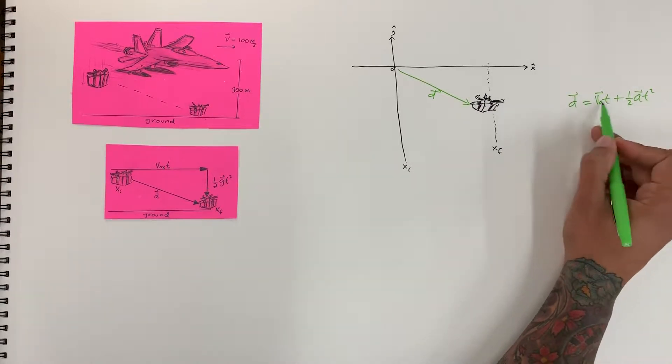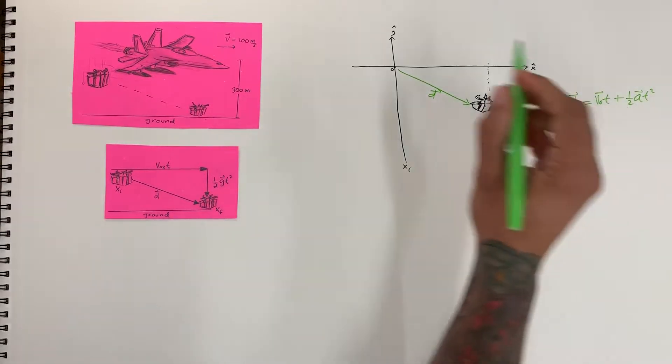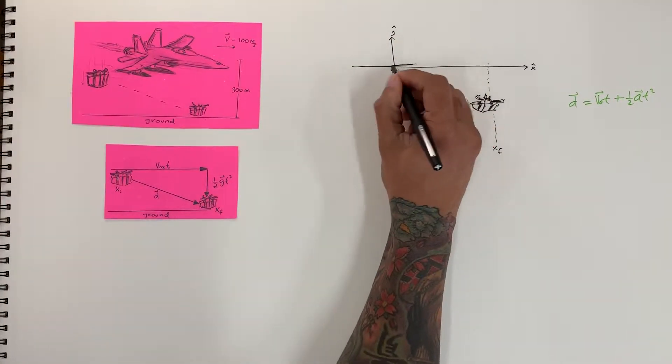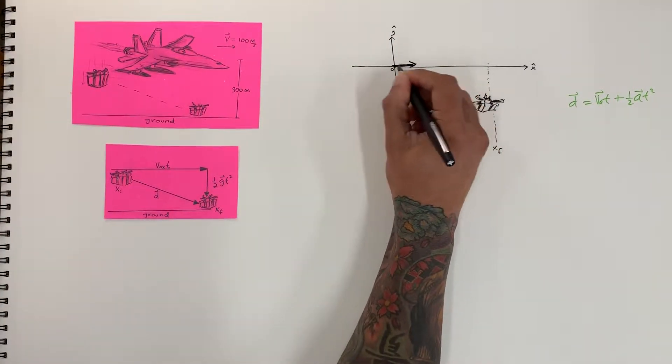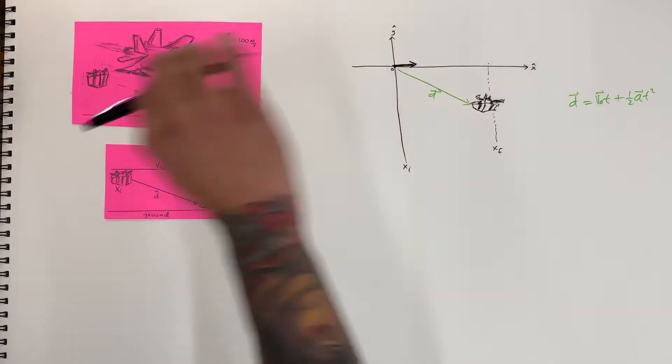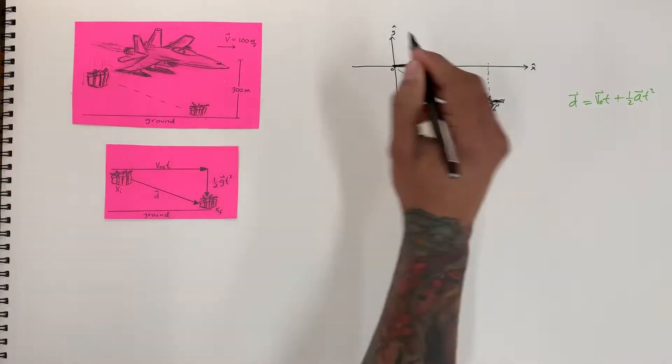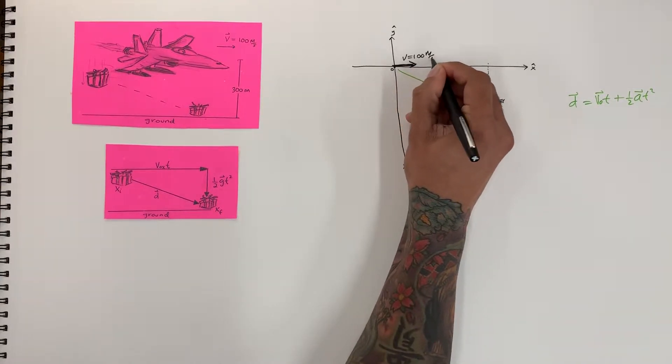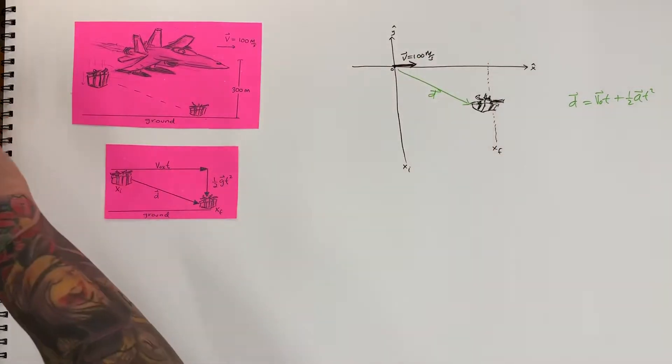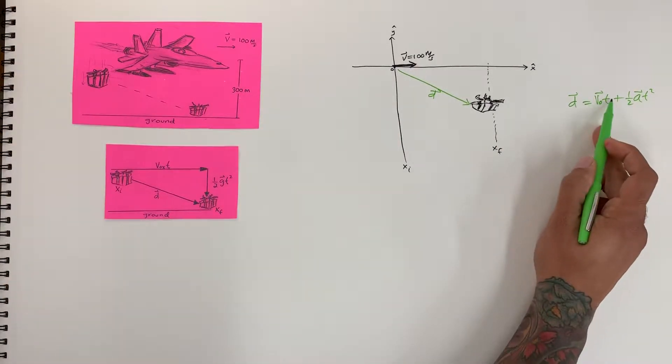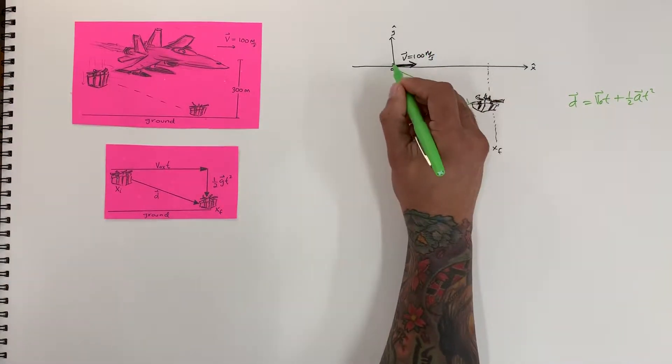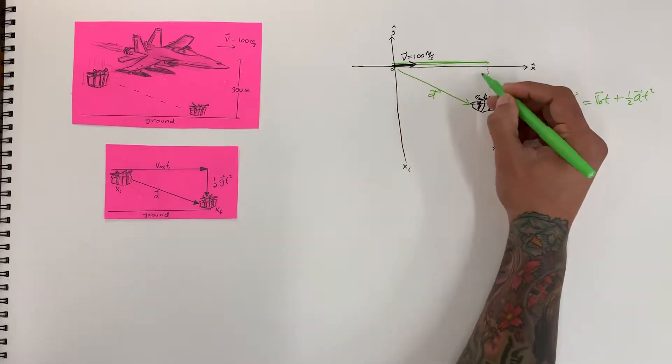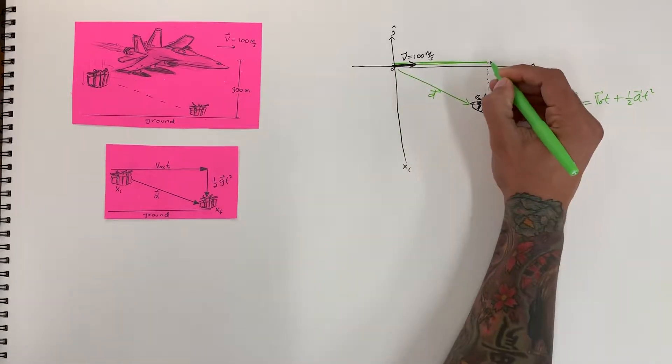We're going to have the velocity initial t always be in the same direction as the initial velocity. So that's the initial velocity of the plane, right? Which is v equals 100 meters per second. And so drawing this vector now, we're going to draw it all the way till we get to the top of our position final.